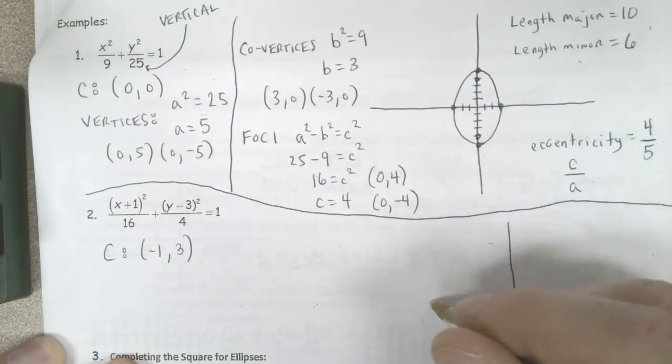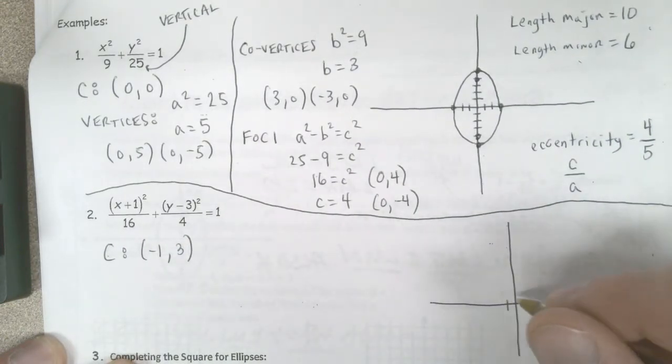So I go over to my graph. I'm going to go ahead and plot my center. Negative 1, 3.